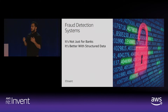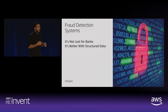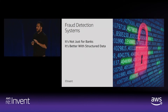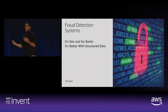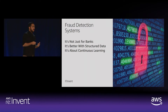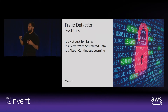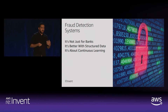Fraud detection works better with structured data. When you have structured data, you can easily make decisions because you already have the information, you've run some data cleanup, and you're not including noise. It is also about continuous learning — you cannot stop and say you're done. You need to continue finding new ways and understanding the data you're collecting from all of your systems.